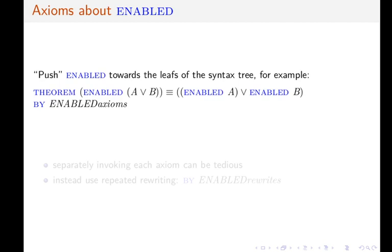There are also axioms about ENABLED. Again, these are used to push ENABLED towards the leaves of the syntax tree. For example, we can distribute ENABLED over disjunction using the proof directive ENABLEDaxioms. And there are many more axioms that can be applied using this proof directive.